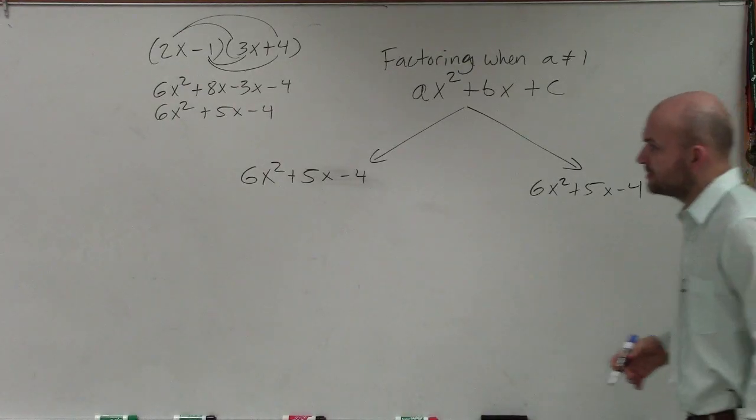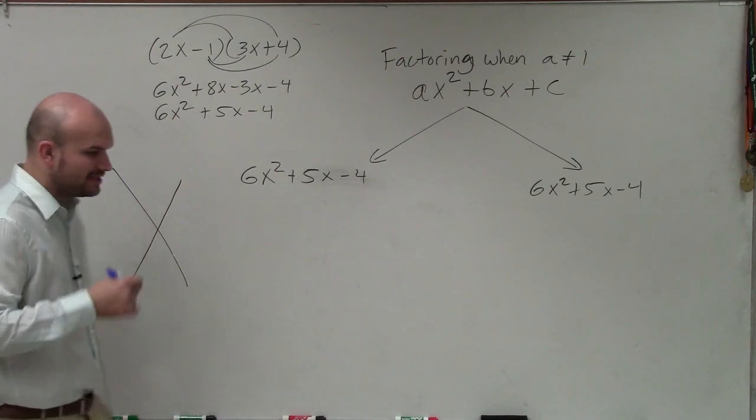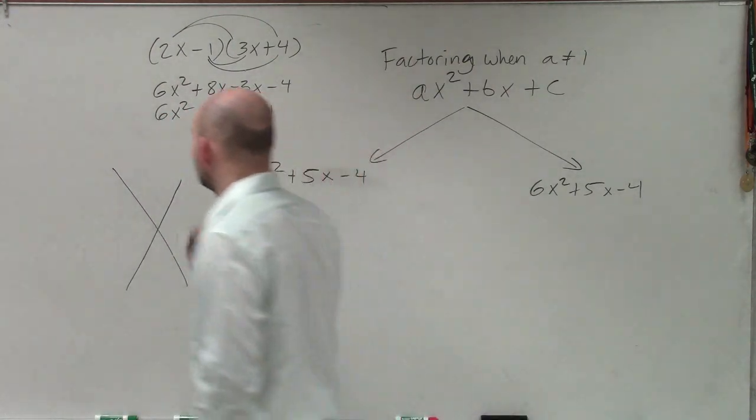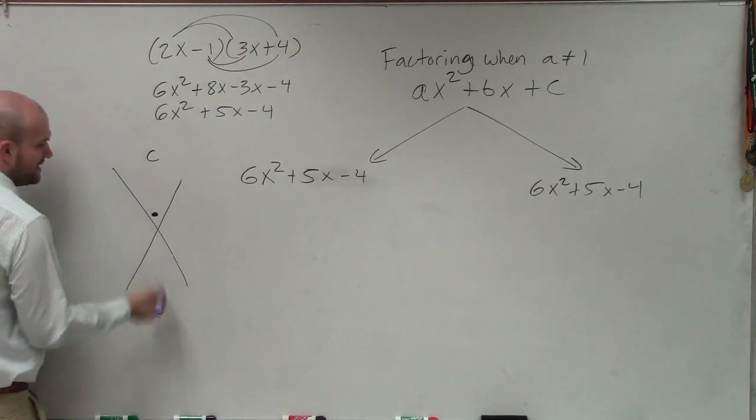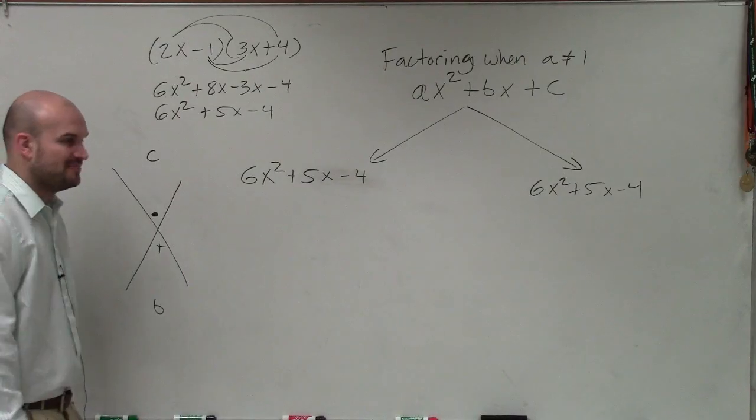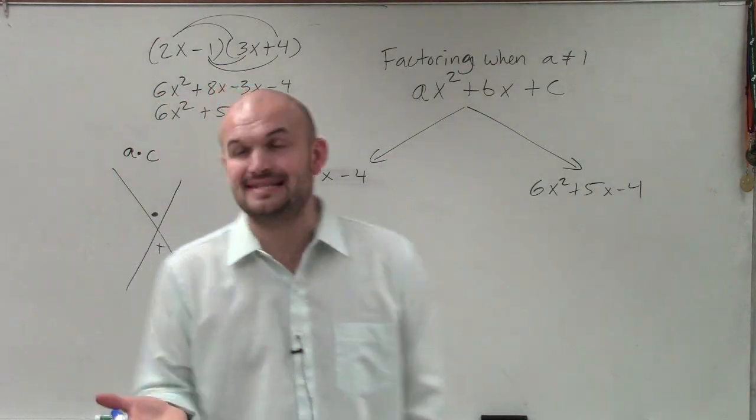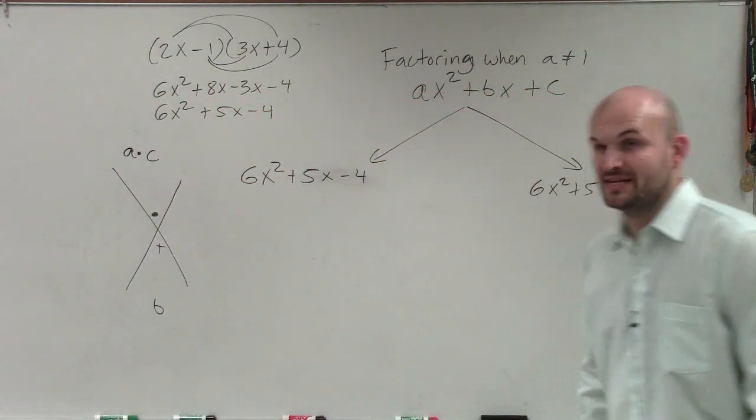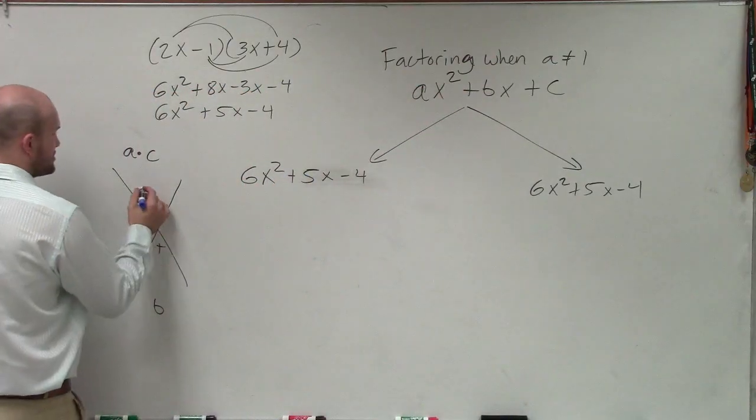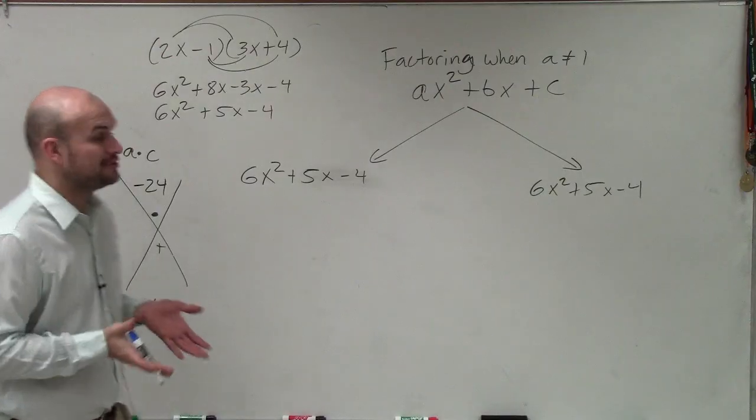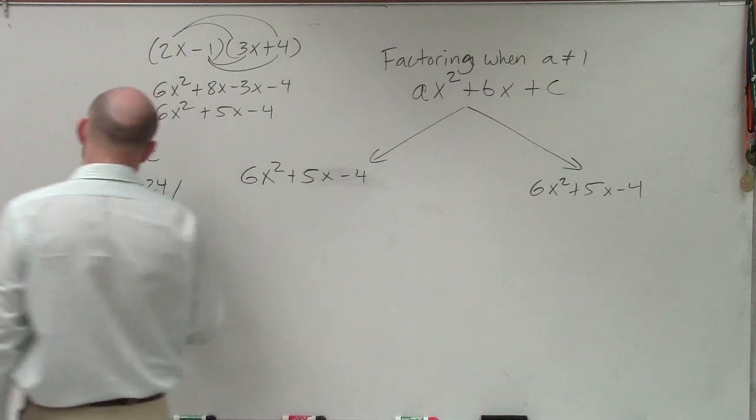So the slow way is what I like to call the AC method. If you remember that when a was equal to 1, we could write C up top and B down below. What we want to do is determine what two values multiply to give us C, but then add to give us B. But now when we have an A, what we're going to have to do is what two numbers multiply to give you A times C, but then add up to give you B. So in this case, I have 6 times negative 4, which is going to be a negative 24. Now what I need to do is determine what two values multiply to give me negative 24, but then add up to give me 5.